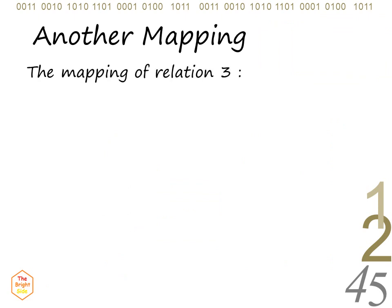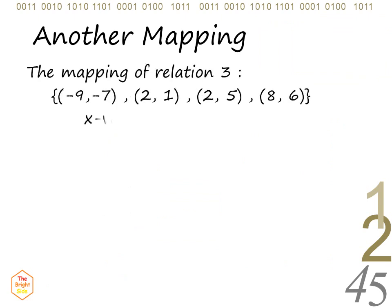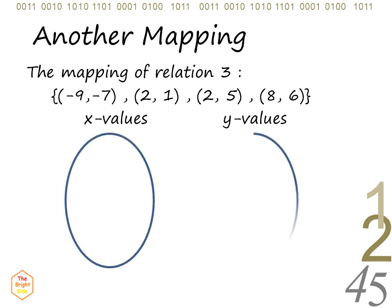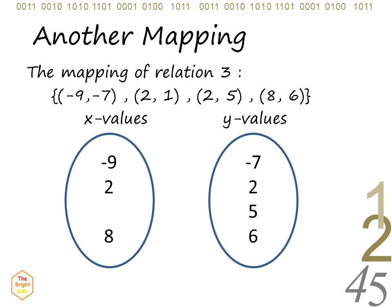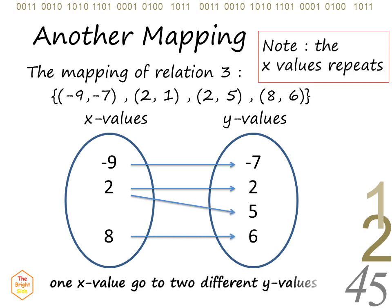In the mapping of the third relation, an x value goes to two different y values, meaning the x values repeat. Since the x values repeat, this relationship is called one-to-many. Therefore, this relation is not a function.